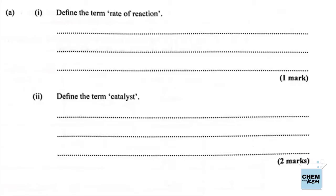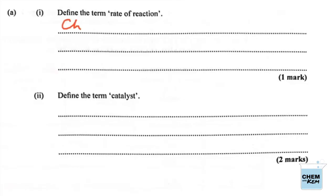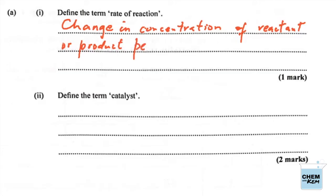Part (a)(i): define the term rate of reaction. The answer is: change in concentration of reactant or product per unit time. Anything having to do with rate — time has to be measured. Part (a)(ii): define the term catalyst. It's a substance that is used to speed up the rate of a reaction but remains chemically unchanged in the process.